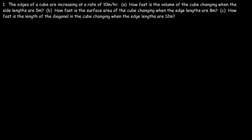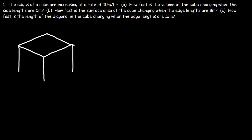The edges of a cube are increasing at a rate of 10 meters per hour. How fast is the volume of the cube changing when the side lengths are 5 meters? Let's draw a picture first. We have this cube and the side lengths of a cube are all the same — let's call it x.